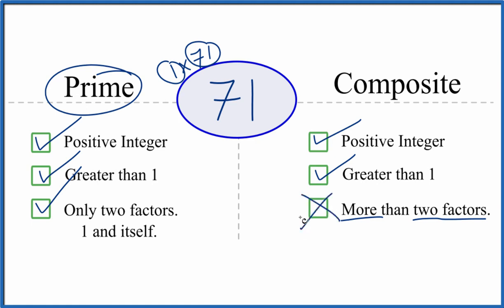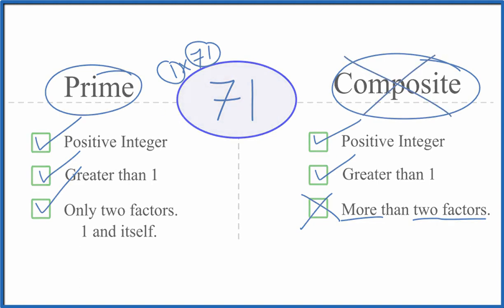So it's not going to be composite. So in answer to our question, 71 is a prime number, but it's not a composite number. Remember, this is Dr. B. Thanks for watching.